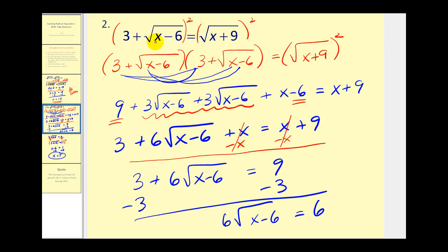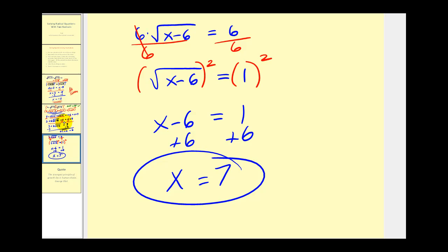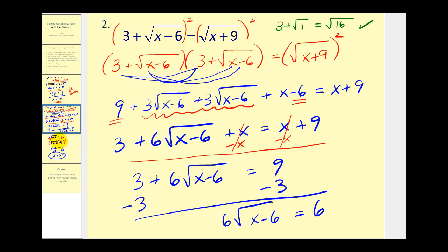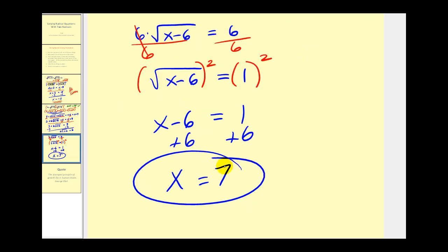We're going to replace x with seven. We'll have three plus the square root of seven minus six, which is the square root of one, equals the square root of seven plus nine, which is the square root of 16. So it'll be three plus one equals four, and that checks. So you can see that some of these problems are going to be fairly time consuming. Be very careful as you work through them, and at the end, make sure you go back and check your answer. I hope you found this video helpful, thank you for watching.